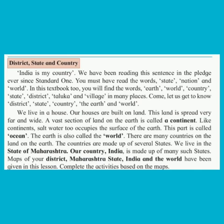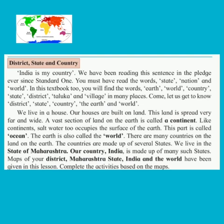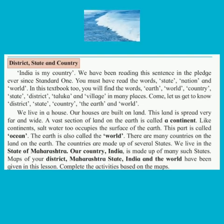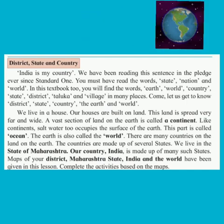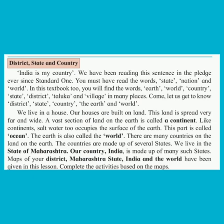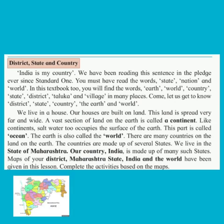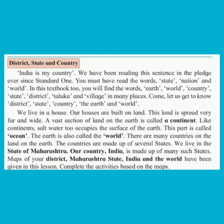We live in a house. Our houses are built on land. This land is spread very far and wide. A vast section of land on the earth is called a continent. Like continents, salt water too occupies the surface of the earth — this part is called ocean. The earth is also called the world. There are many countries on the land on the earth. The countries are made up of several states. We live in the state of Maharashtra. Our country India is made up of many such states. Maps of your district, Maharashtra state, India, and the world have been given in this lesson.